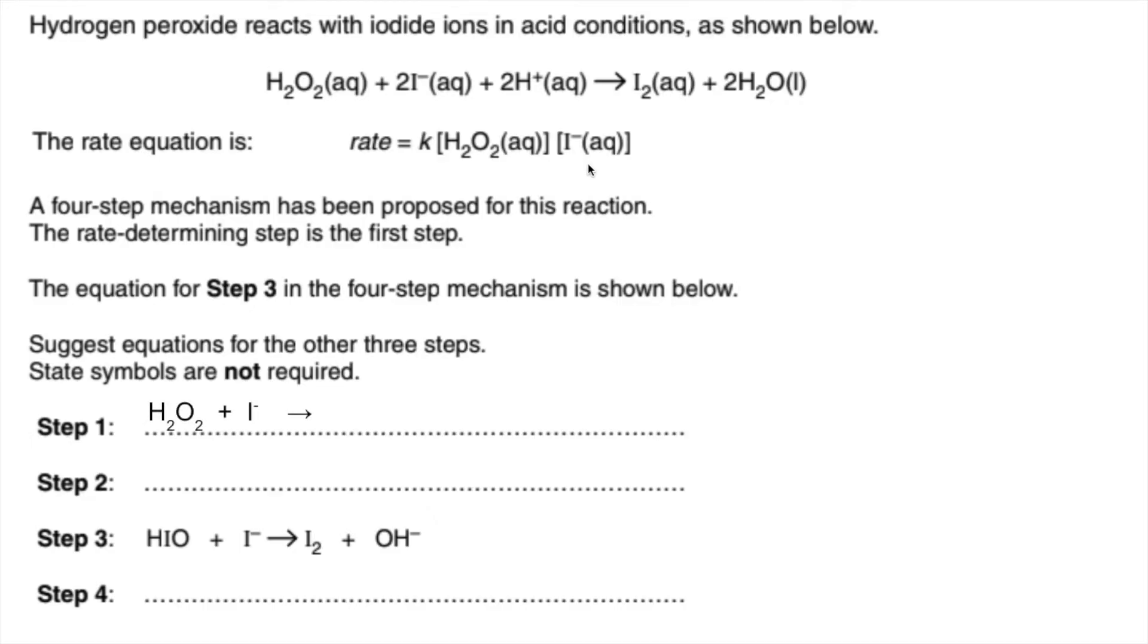That goes in first and then the way I'm processing this one is I'm looking at the overall equation and asking myself can I make any of these products. Well I can't make the I2 because I've only got one mole of I in there but we could make one of those water molecules. So we'll do that and to get this to balance for mass and charge I've made this IO- ion.